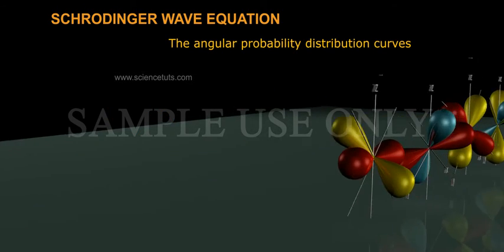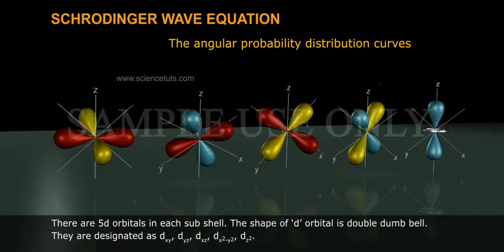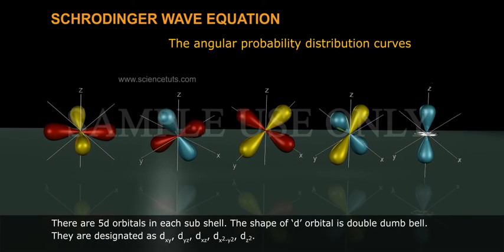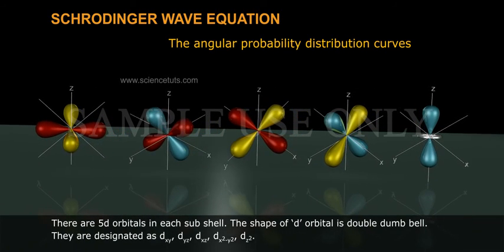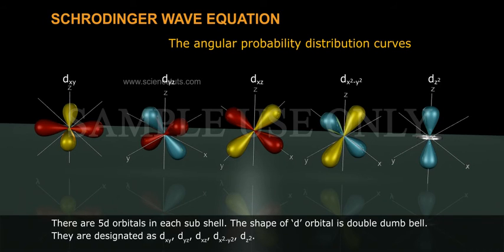The angular probability distribution curves. There are 5 D orbitals in each subshell. The shape of D orbital is double dumbbell.